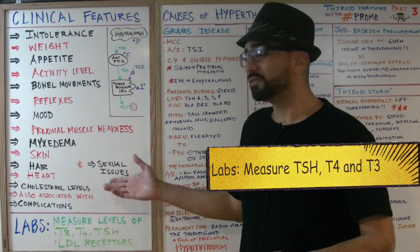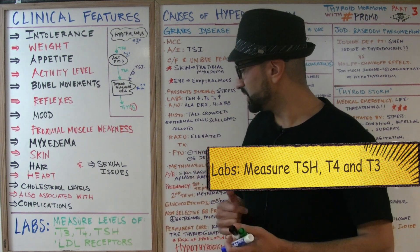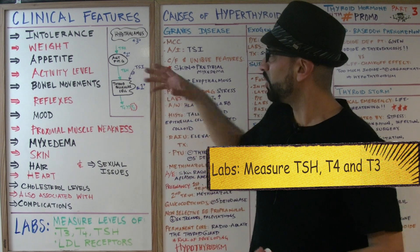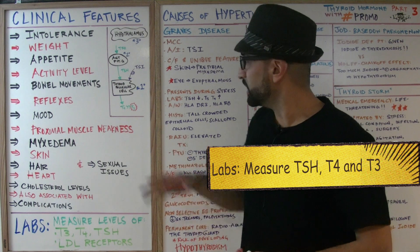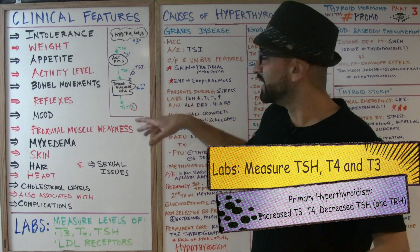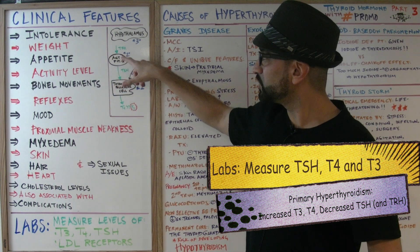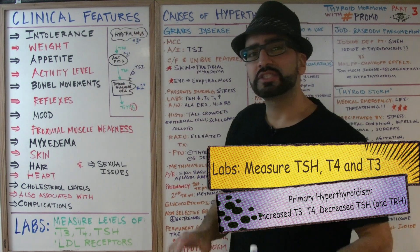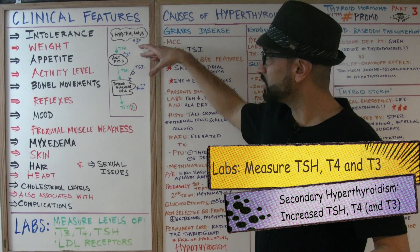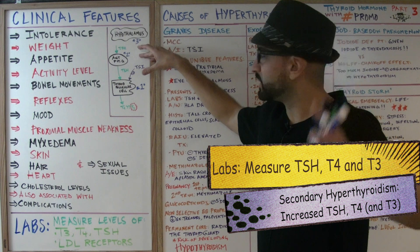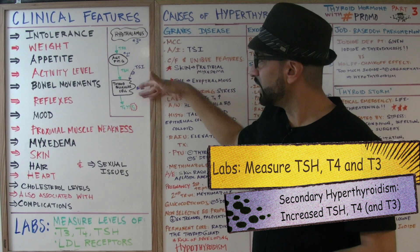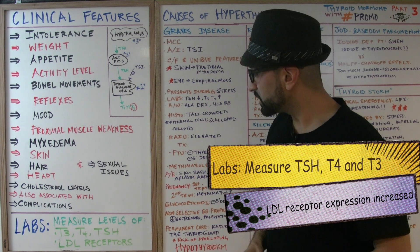For labs, always measure T4 and TSH. Both T3 and T4 will be elevated. TSH levels vary depending on whether it's a primary or secondary issue. If it's primary — the problem is in the thyroid gland — TSH will be decreased, because elevated T3/T4 feeds back to suppress TRH and TSH. If it's secondary — such as a pituitary adenoma — TSH levels will be increased, leading to increased T4 and T3.